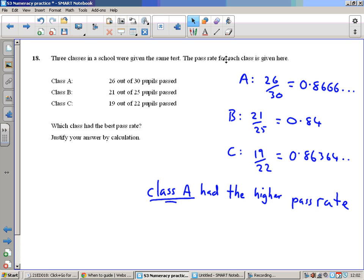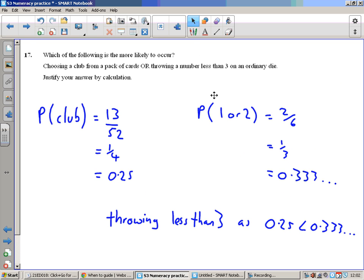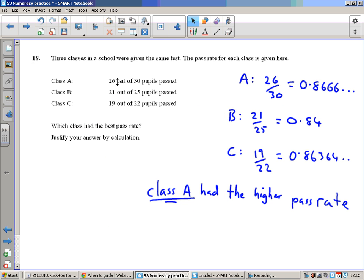Three classes were given a test. The pass rate is given. Which class had the best pass rate? Just like the previous question, get them into a decimal you can compare them. 26 30ths, so 26 divided by 30 is 0.866 recurring. Same for the other two and pick the largest. So the pass rate up here is slightly higher than the pass rate down here, so class A had the higher pass rate. And that's everything.